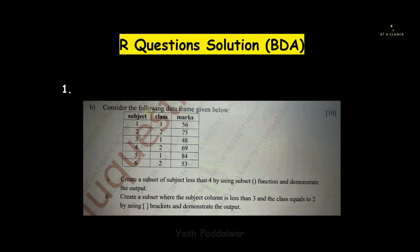This is the very first question. It asks us to consider the following data frame. A data frame is given — for those who don't know, a data frame is nothing but a data set, a collection of rows and columns. Here you can see there are three columns: subject, class, and marks. The first question asks us to create a subset — a subset is basically a small part from the entire data set. We have to make a subset of the subject column where the value is less than four. The subject column has numbers ranging from one to six, so subjects with values one, two, and three will be the final answer.